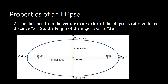Another property: the distance from the center to a vertex of the ellipse is referred to as distance a, so the length of the major axis is 2a. Our a must be located along the major axis, since it is the distance from the center to the vertex. Measuring the full major axis means adding a on both sides from the center, giving us 2a.